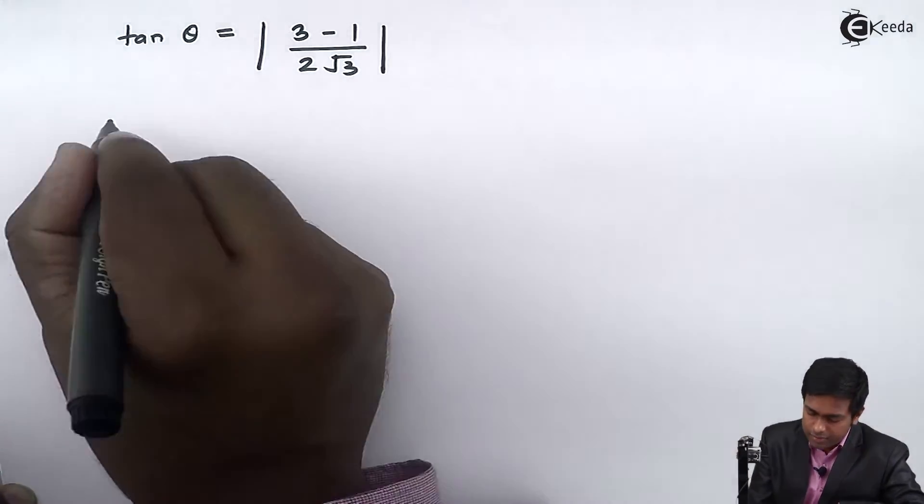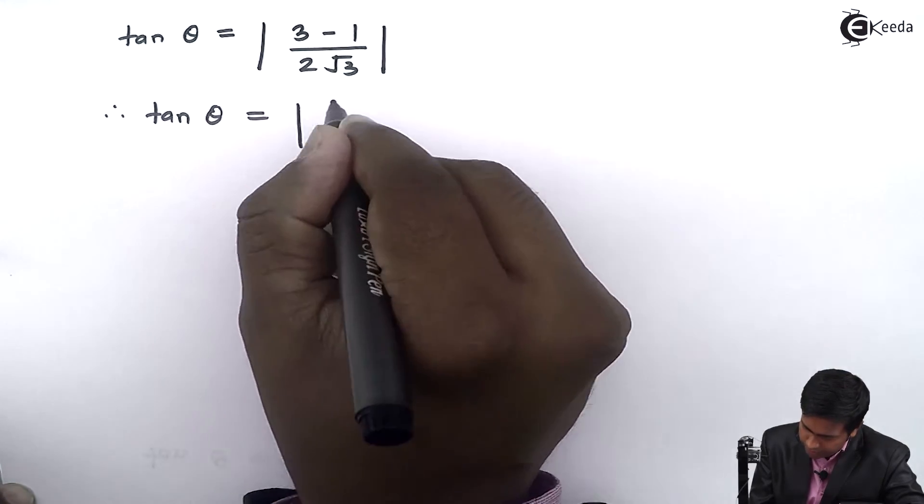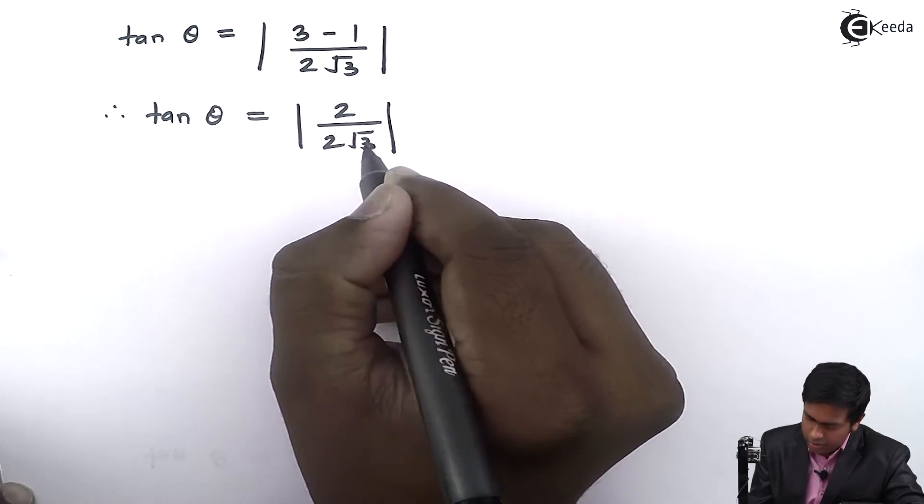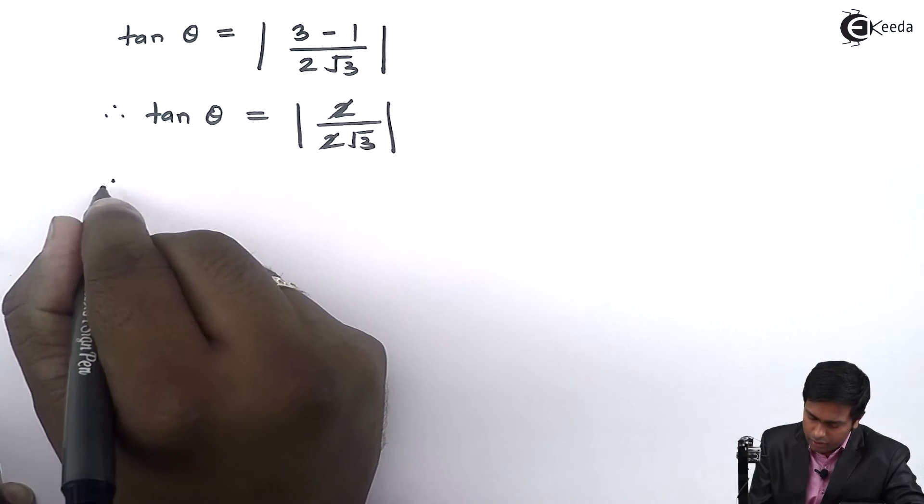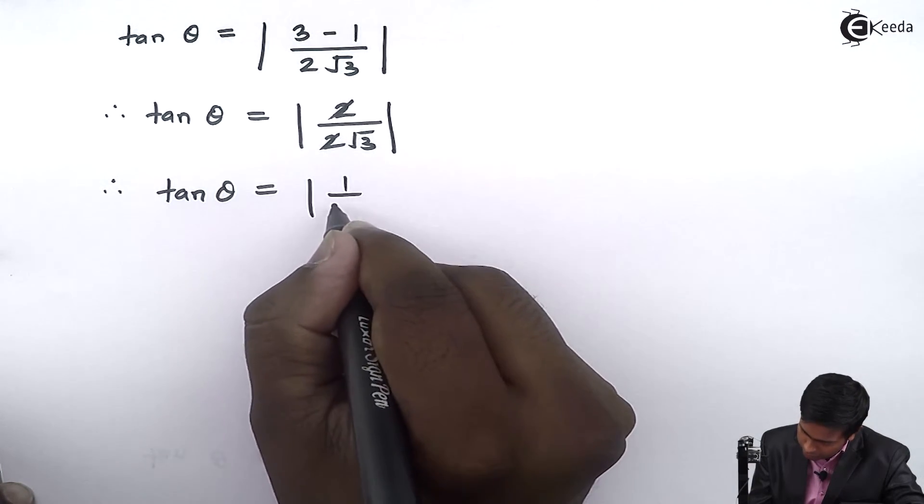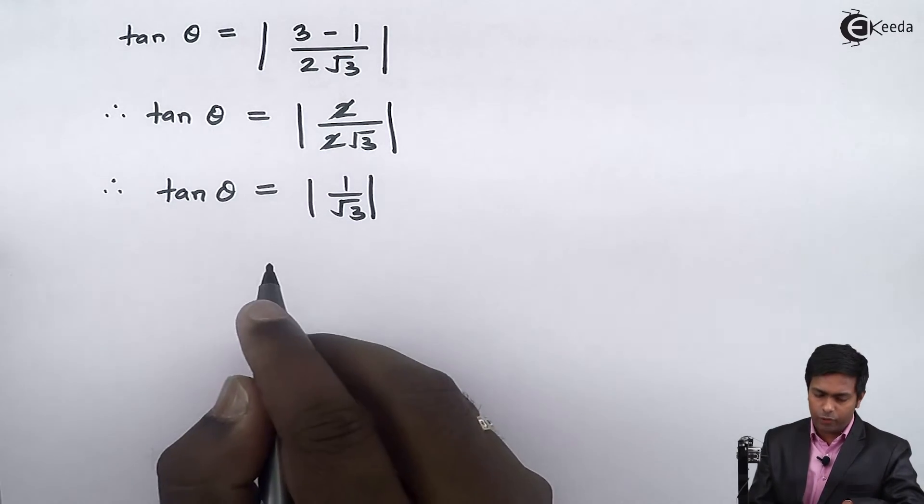Therefore tan θ = 2/(2√3). Canceling the 2, we get tan θ = |1/√3|.